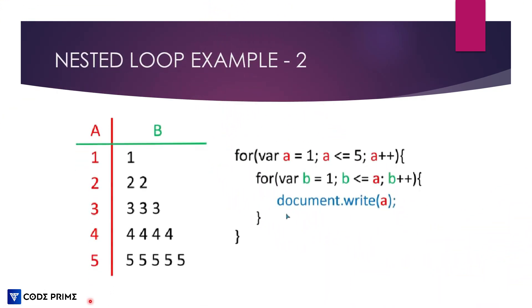Now we're going to see example number two of the nested loop. This is a similar type but different. Here the output is: 1 1, 2 2, 3 3 3, 4 4 4 4, 5 5 5 5 5. We can see that variable 'a' and 'b' columns are the same — column 3 prints three times, column 4 prints four times, column 5 prints five times. It's the number increasing by sequence with each increment.